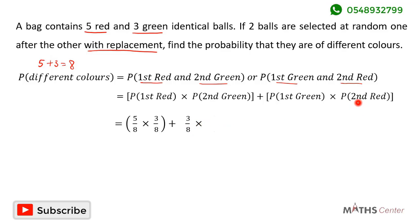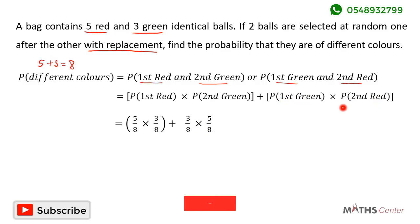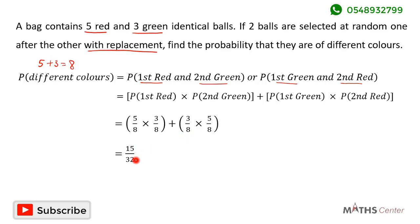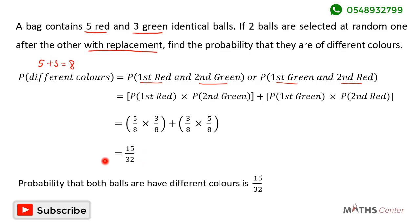After selecting the first green ball and replacing it, the bag again has eight balls with five red. So the probability that the second ball is red is five divided by eight. The probability for the first instance is five-eighths times three-eighths, which is 15 over 64. Adding both instances: 15/64 plus 15/64 gives 15/32. So the probability that the two selected balls are of different colors is 15 divided by 32.